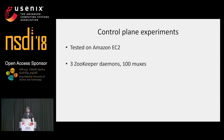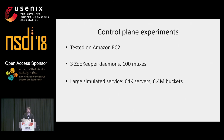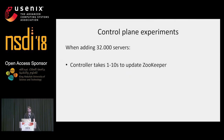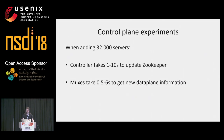We deployed 100 muxes and a three-node ZooKeeper cluster on Amazon EC2, simulating a large network service with 64,000 servers and 6.4 million buckets — that's 100 buckets per server, giving very fine granularity for traffic reassignment. When doing something drastic like adding or removing 32,000 servers, the controller takes 1 to 10 seconds to update ZooKeeper. The muxes then take an additional half a second to six seconds to download the new data plane information, generating about one gigabyte of control traffic — roughly 10 megabytes per mux.